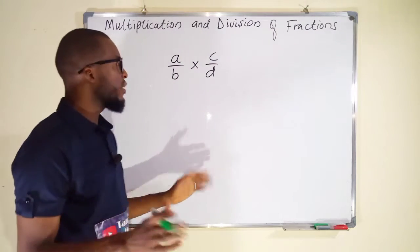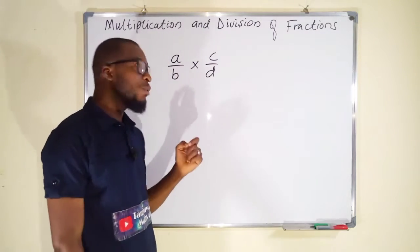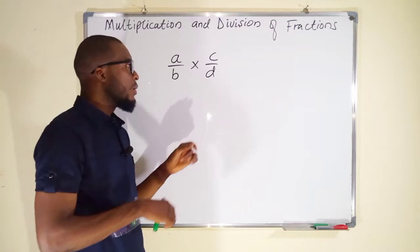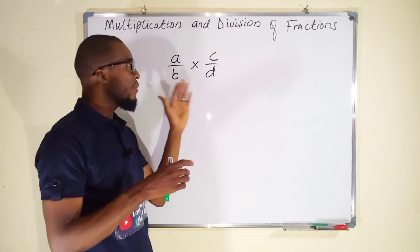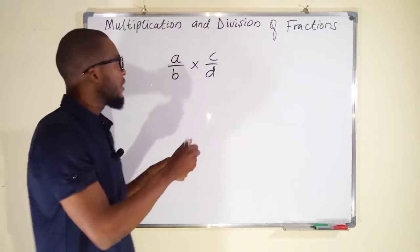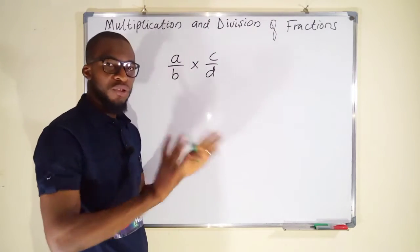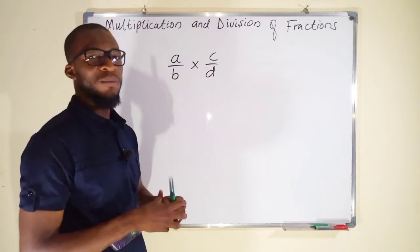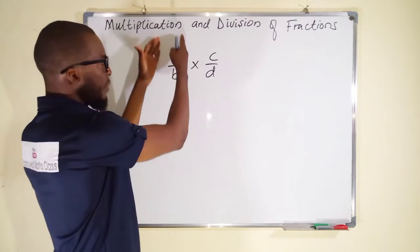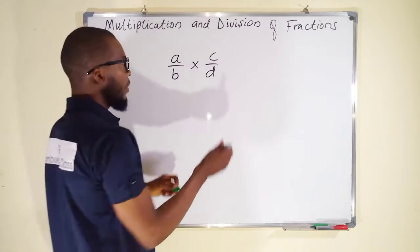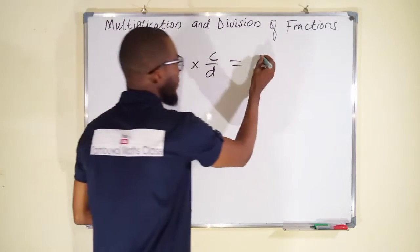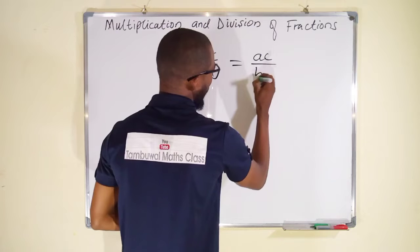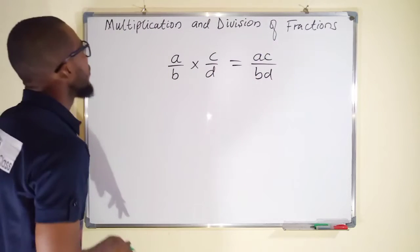It is advisable to reduce fractions to their lowest terms before carrying out multiplication. This reduction is irrespective of direction — whether left to right or diagonally. If A and D have any common factor, reduce them; likewise if B and C have any common factor. So A times C gives AC, and B times D gives BD.